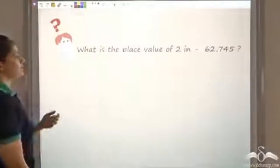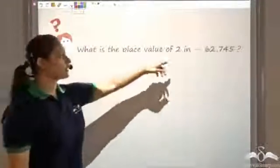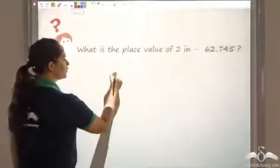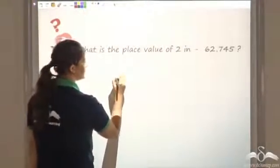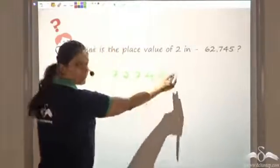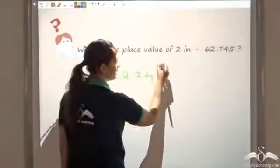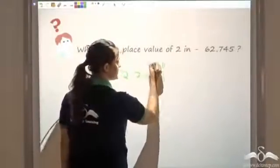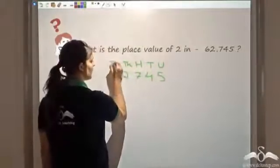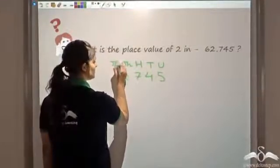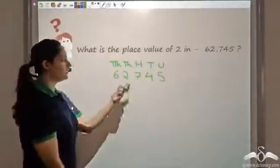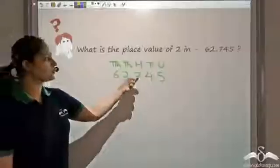Now let us see whether you can answer this question: what is the place value of 2 in this number? From the rightmost side we write units, tens, hundreds, thousands, and ten thousands. So the 2 here is in the thousands place — the place value of 2 is thousands.